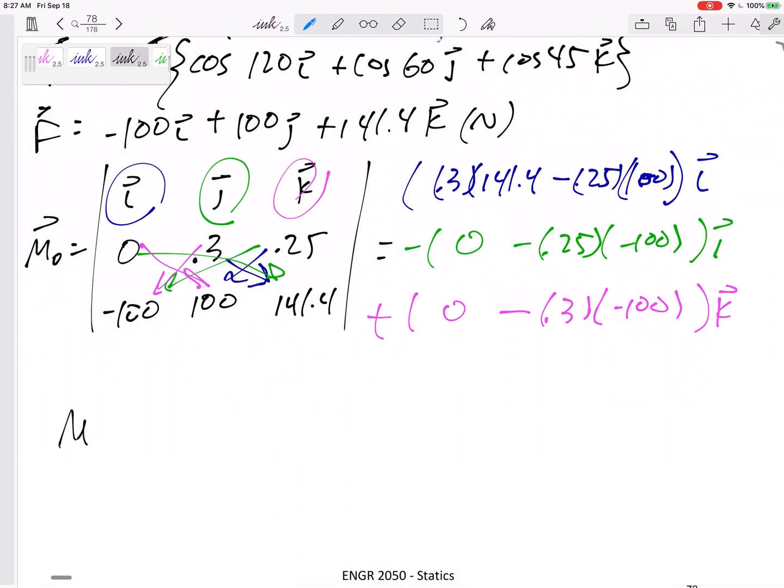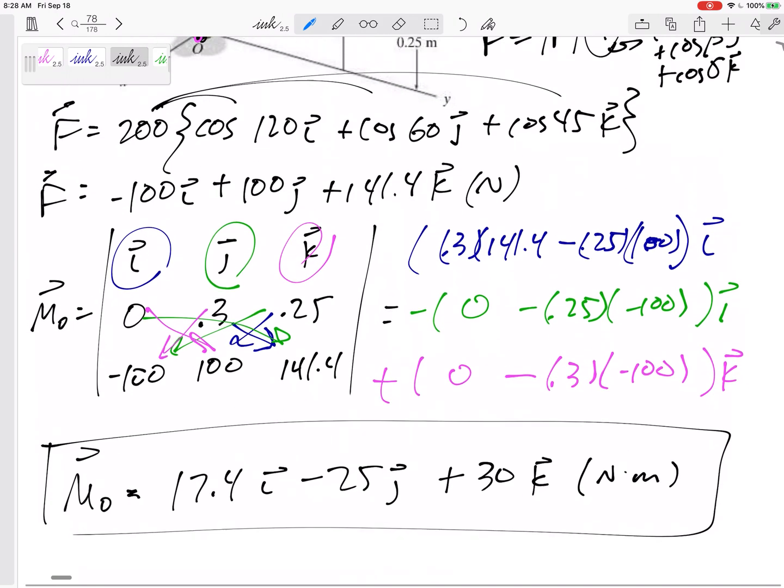All right, so the moment about O is going to be 17.4 in the i minus 25 in the j plus 30 in the k, units of newton meters. So there we go.